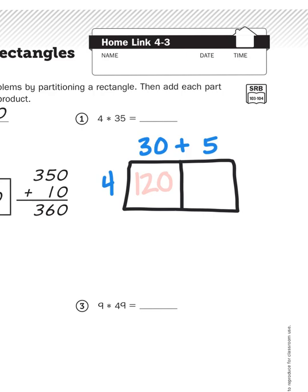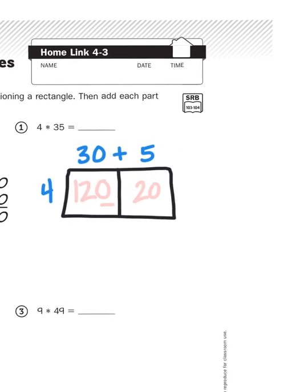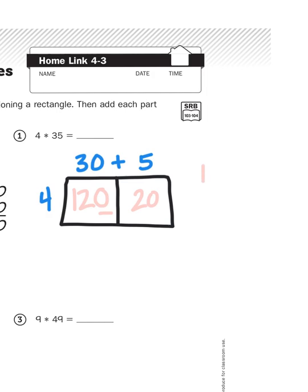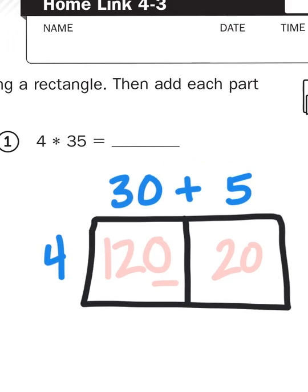Three tens times 4 gives me 12 tens or 120, and then I multiply 5 times 4, of course that's 20. Then what I do is I just add the two amounts together: 120 plus 20, and that's right, it's going to give me 140. Easy, right?